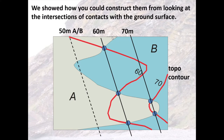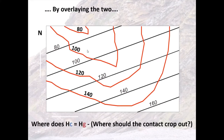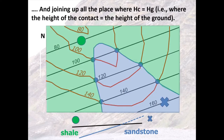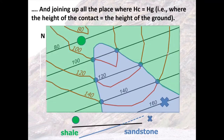In one of our examples, we showed how we could use the intersection between a geological contact — between two different units — and the ground contours. We showed how we could use that intersection between the contact and the topography to draw structural contours. We also showed that if we have a structural contour map and merge it with a topographic map, anywhere where the height of the structural contour equals the height of the ground is where our structure would crop out on the surface, allowing us to produce a geological map.